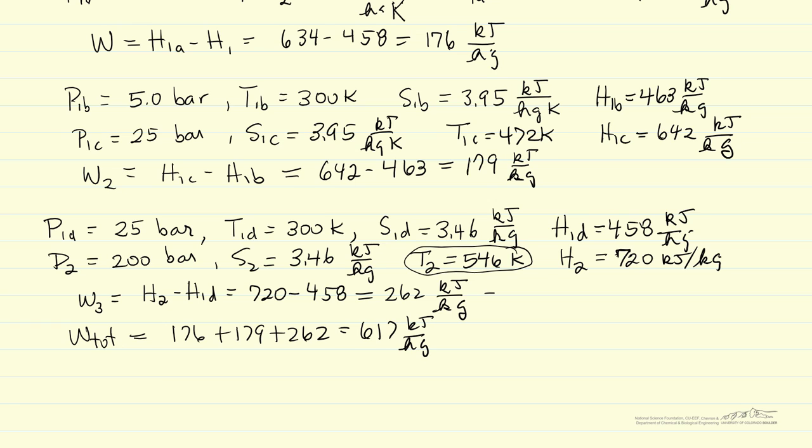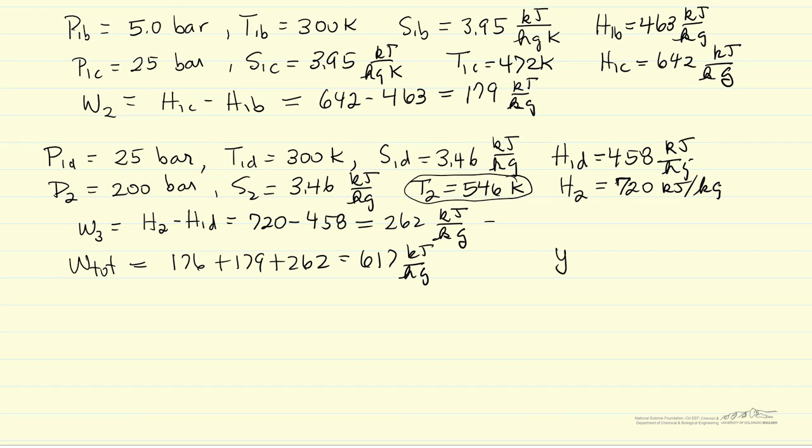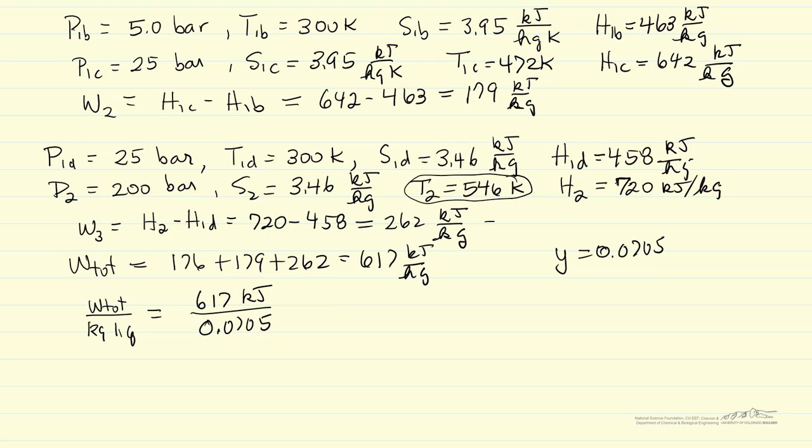This is per kilogram that's fed into the Joule-Thomson expansion. But what we're interested in is the work per kilogram of liquid formed. Well, Y is 0.0705, so only 7% of what's fed into Joule-Thomson is converted to liquid. Therefore, the work total for the three compressors per kilogram of liquid would be 617 kilojoules divided by 0.0705 kilograms. This gives 8752 kilojoules per kilogram of liquid, or 8.75 megajoules per kilogram of liquid. It takes a lot of energy because we're compressing the gas and then lowering the pressure again.